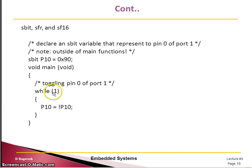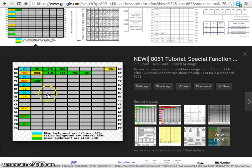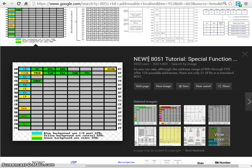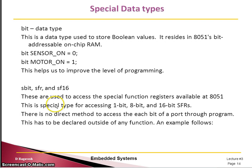Starting from a C program with void main and while(1) — an infinite loop where the condition is always true — we write P10 equals not of P10. But P10 is not available in normal C; it is defined in embedded C like this: sbit P10 = 0x90. The address 0x90 refers to the port, and in SBIT mode bit 0 is 0x90, bit 1, bit 2 up to bit 7. Whatever address is shown corresponds to the bit addressable locations. Not all registers are bit addressable — some are not. So, sbit and SBIT are very important in embedded programming.